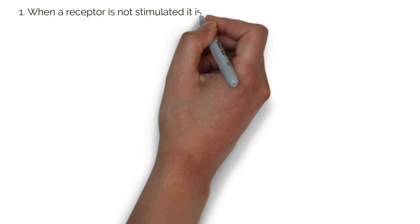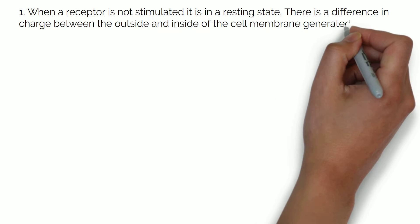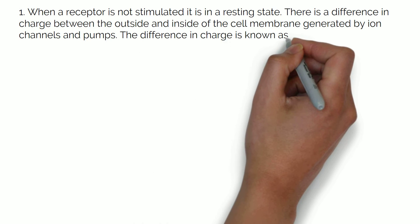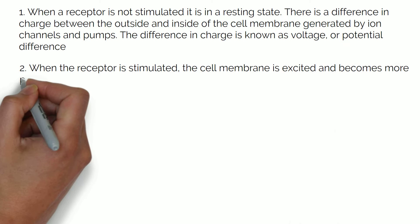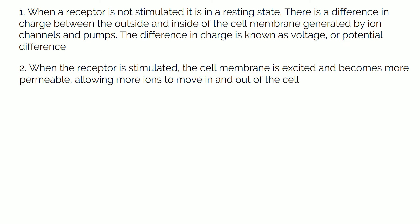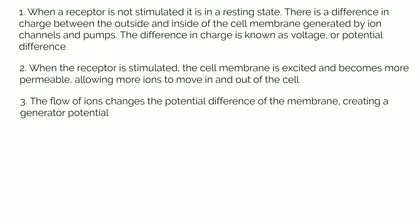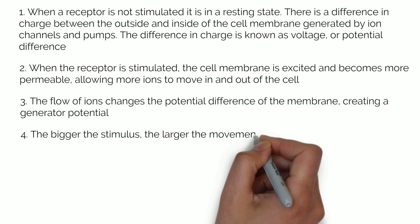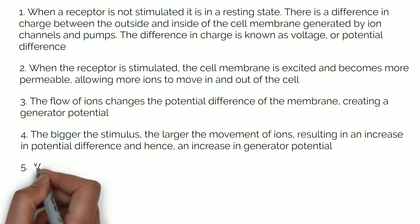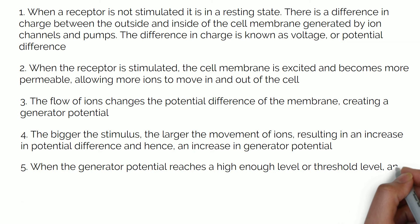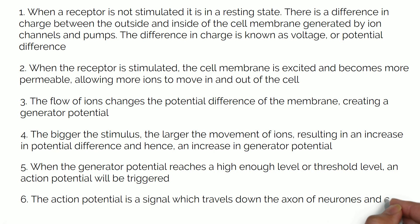When a receptor is not stimulated, it is in a resting state. There is a difference in charge between the outside and inside of the cell membrane, generated by ion channels and pumps — this difference in charge is known as voltage or potential difference. When the receptor is stimulated, the cell membrane becomes more permeable, allowing more ions to move in and out of the cell. The flow of ions changes the potential difference of the membrane, creating a generator potential. The bigger the stimulus, the larger the movement of ions, resulting in an increase in potential difference and hence an increase in the generator potential. When the generator potential reaches a threshold level, an action potential will be triggered — a signal which travels down the axon and can be passed on to other neurons for communication.